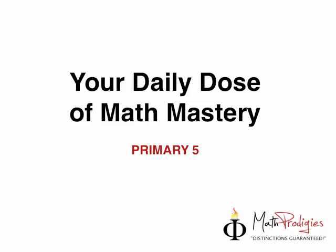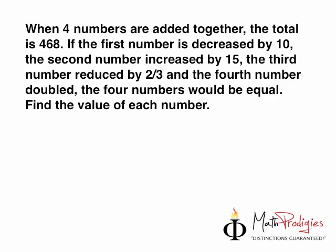But now, I'm gonna reveal to you the answers for yesterday's question. So if those of you done it right, I'm gonna give you a high five and give you a good math prodigy. The question was: when four numbers are added together, the total is 468. If the first number is decreased by 10, the second number is increased by 15, the third number reduced by 2/3, and the fourth number doubled, the four numbers would be equal. Find the value of each number.